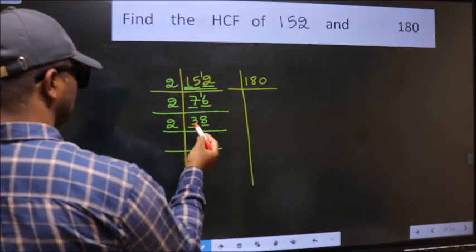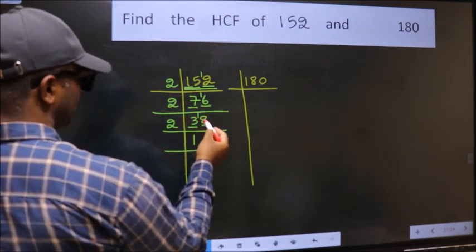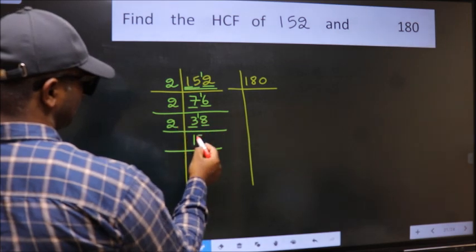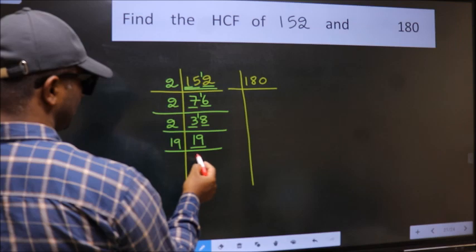Last digit is 8, even, so take 2. First number is 3. A number close to 3 in the 2 table is 2 times 1, 2. 3 minus 2 is 1, 1 carried forward gives 18. When do we get 18 in the 2 table? 2 times 9 is 18. 19 is a prime number, so 19 times 1 is 19.